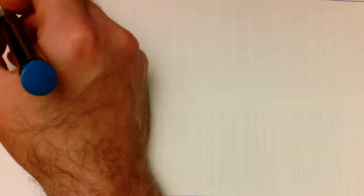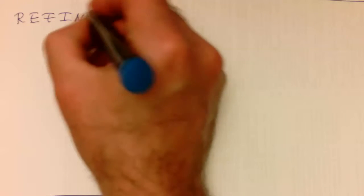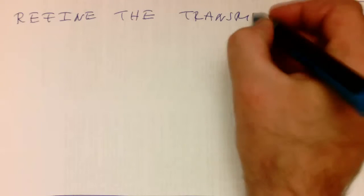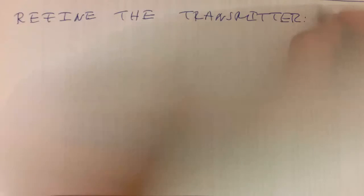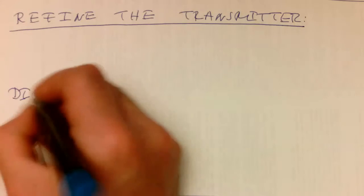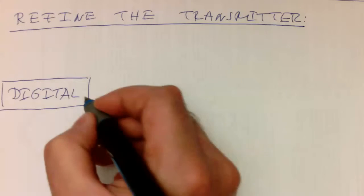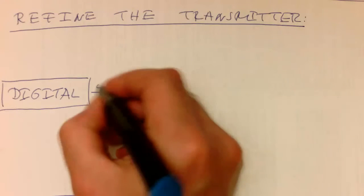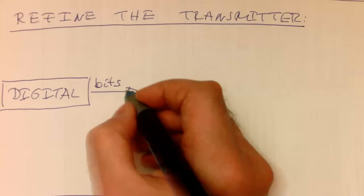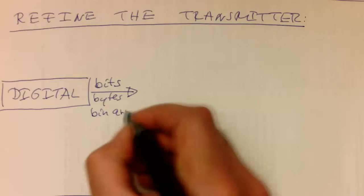So let's refine the digital transmitter. So we have got now our digital data here, which is in bits, bytes, but always some kind of binary data.